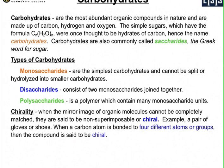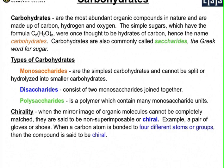The simple sugars have a formula that can be written in the form of carbon and water, which is where they came up with the name hydrates of carbon, or carbohydrates. Also, the Greek word for sugars — saccharides — is the more common name used for these carbohydrates because they are our sugars involved in our biological processes.